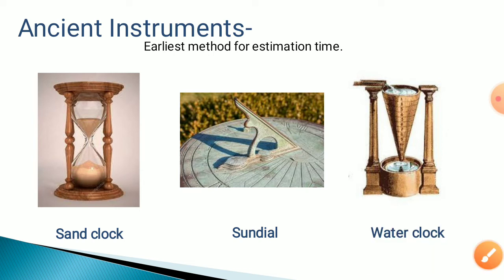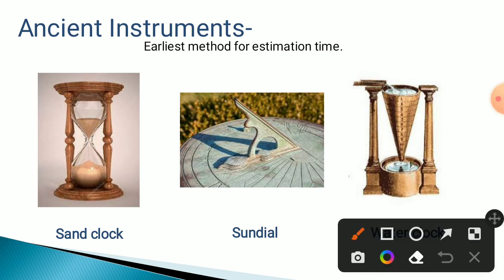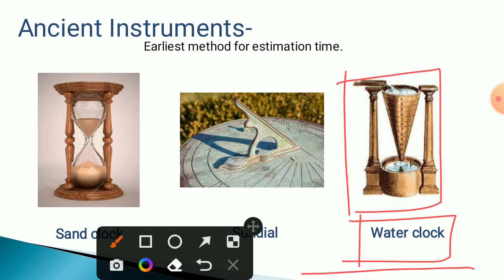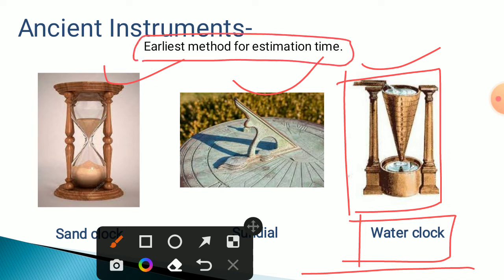The water clock uses the regulated, continuous flow of water to measure time. Along with the sundial and sand clock, the water clock is one of the ancient instruments for measuring time.